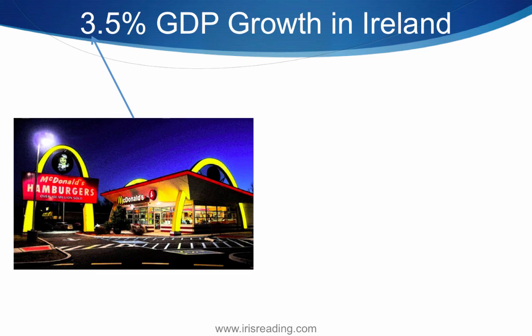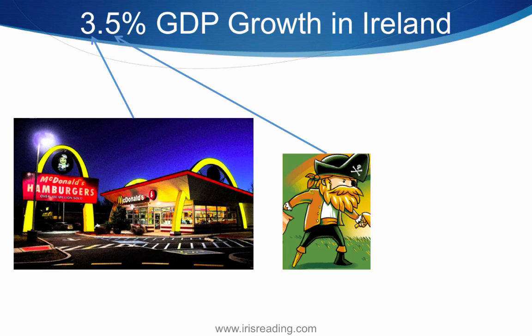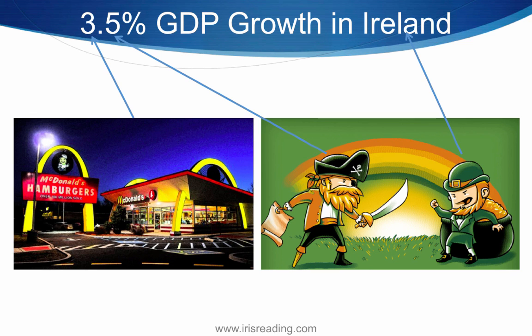The 3 is McDonald's, so picture yourself walking into a McDonald's. The 5 — we need something related to a hook. When I think about hooks, I think of pirates. So picture yourself walking into the McDonald's and there is a pirate inside. And we need something for Ireland — the first thing that popped into my mind was leprechauns. So obviously we're going to have these two fight over something, maybe they're fighting over a Big Mac. You might think of four-leaf clovers or something else for Ireland, but the idea is we're taking these elements and turning them into a story: the 3, the 5, and the leprechaun.